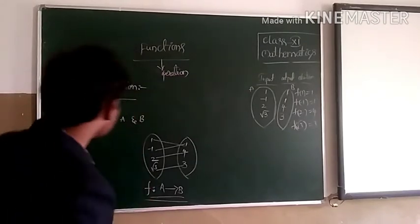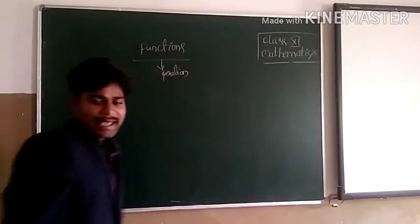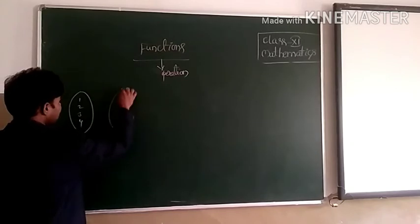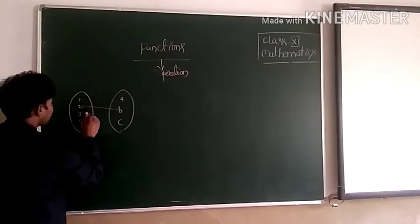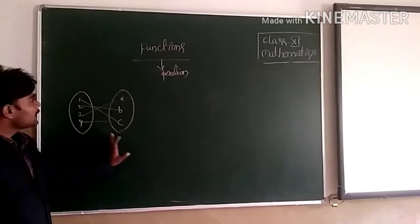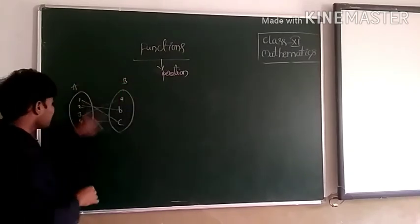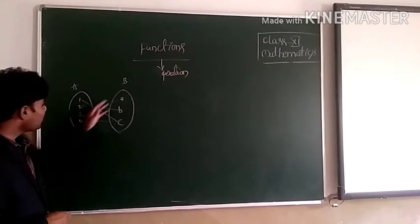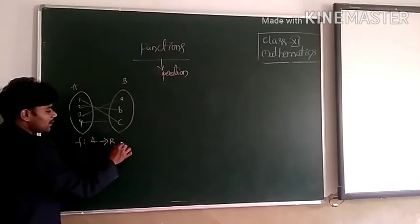Suppose set A = {1, 2, 3, 4} and set B = {A, B, C}. I map the elements: 1 → C, 2 → B, 3 → A, 4 → C. So each element of set A has one and only one image in set B — 1 has one image, 2 has one image, 3 has one image, and 4 has one image. So this mapping from A to B is a function.